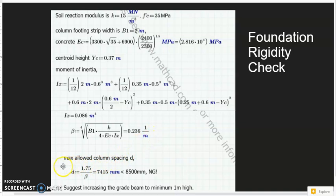So we get maximum allowed column spacing d equals 1.75 over β, which is 7.115 meters. Now since we're using 8.5 meters, the whole foundation rigidity is not enough to use our conventional rigidity method.